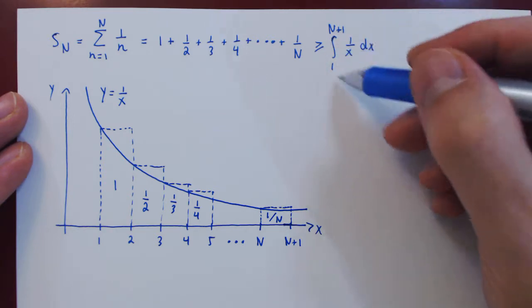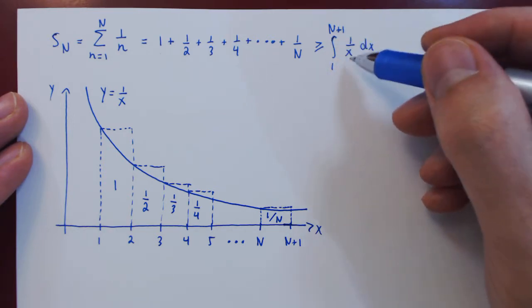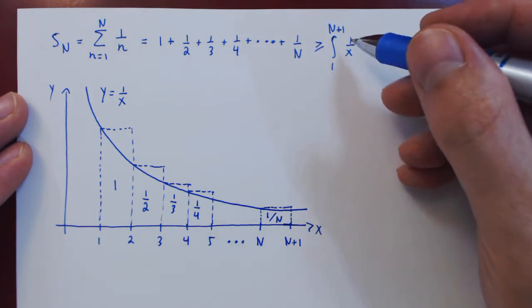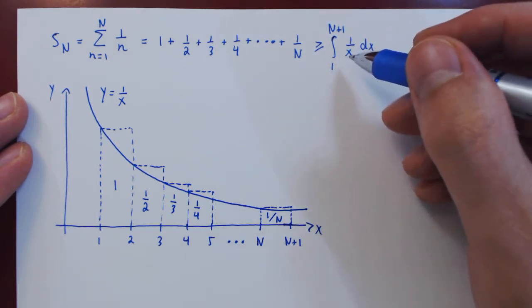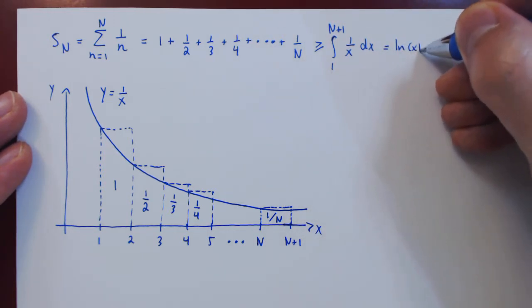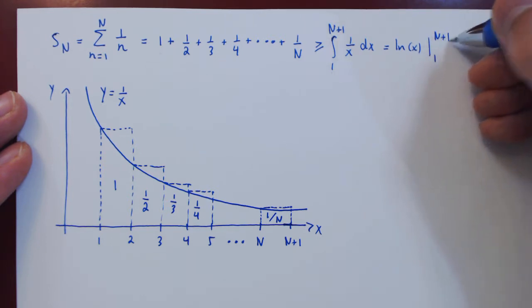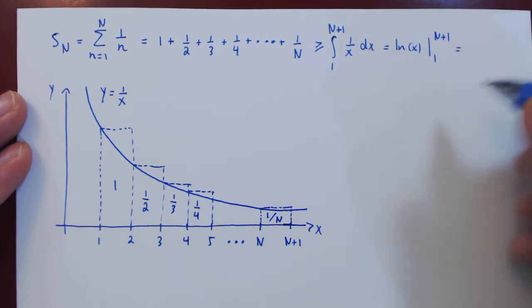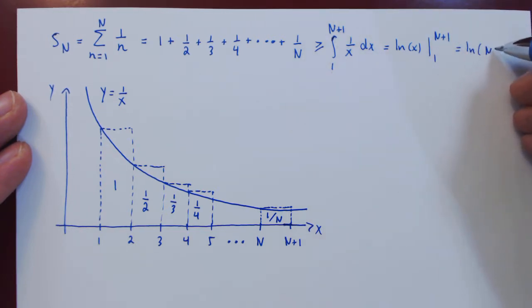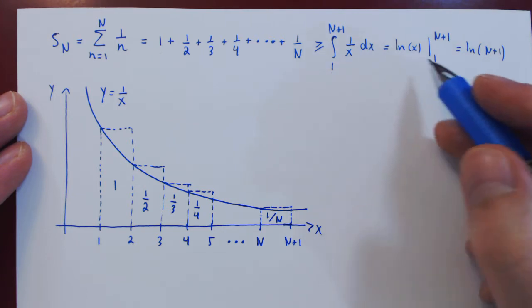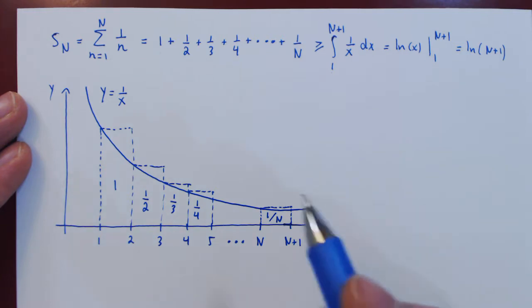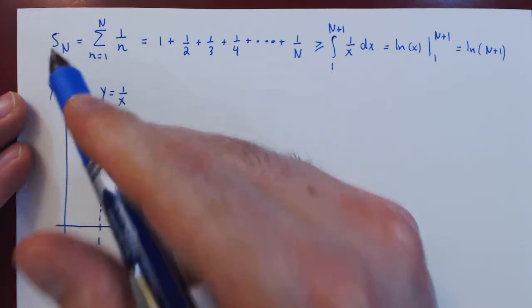We can now find the exact area below 1 over x from 1 to n plus 1 using the fundamental theorem of calculus. An anti-derivative of 1 over x is, of course, ln of x. We evaluate from 1 to n plus 1, so we get ln of uppercase N plus 1, then minus ln of 1, which is 0. So all we have is ln of uppercase N plus 1. And this is true for any choice of uppercase N.